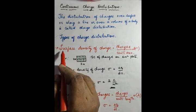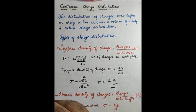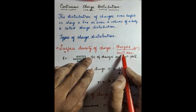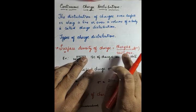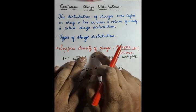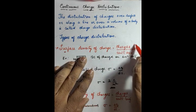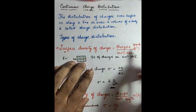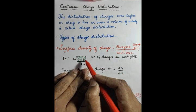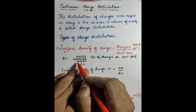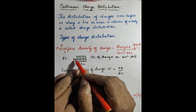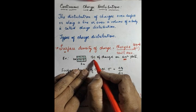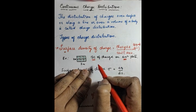Next, surface density of charge. On a surface, it is always represented by sigma — the Greek letter sigma. Consider a plate of width 2 meters and length 3 meters. The total area is 6 meter square.